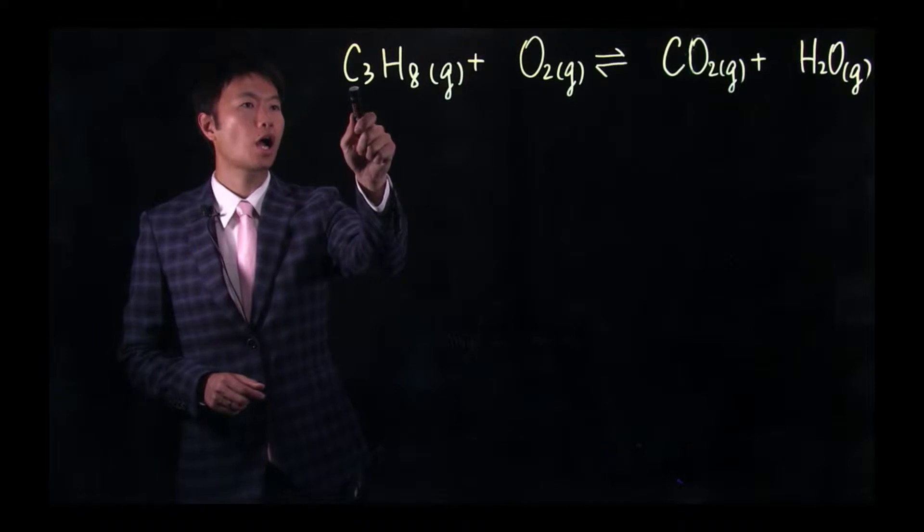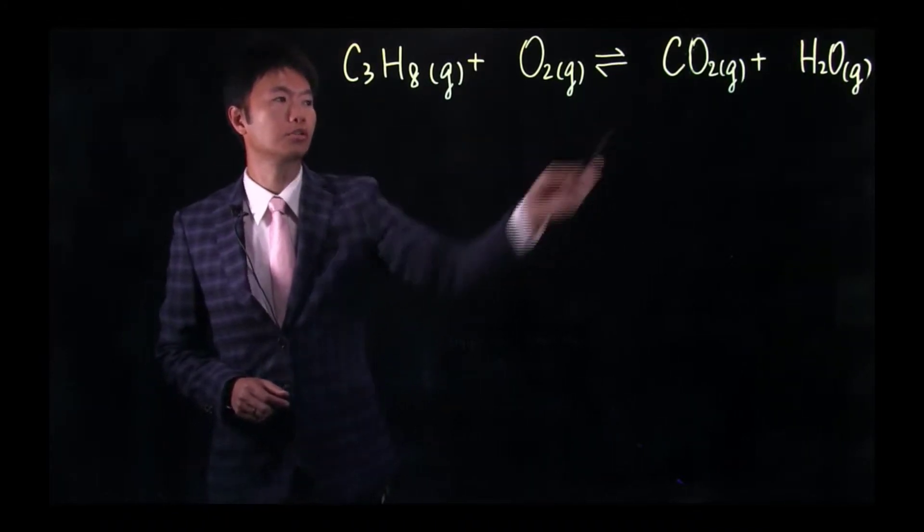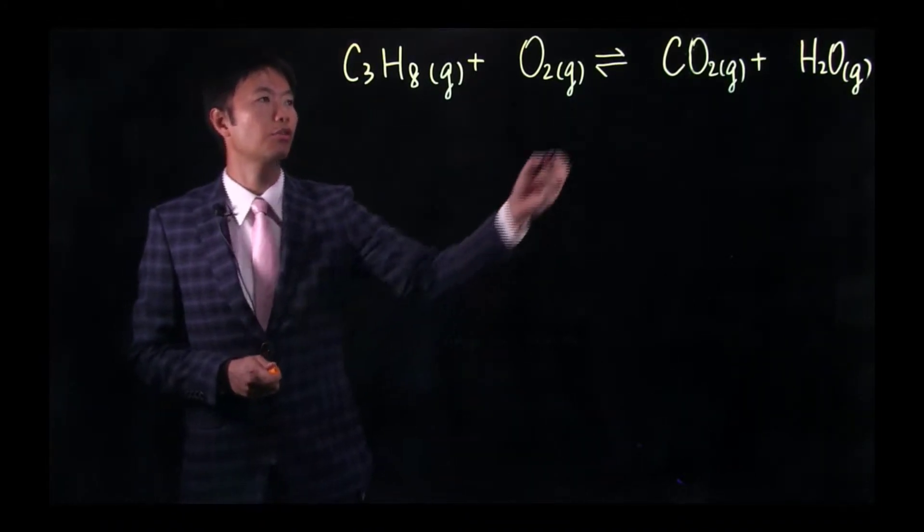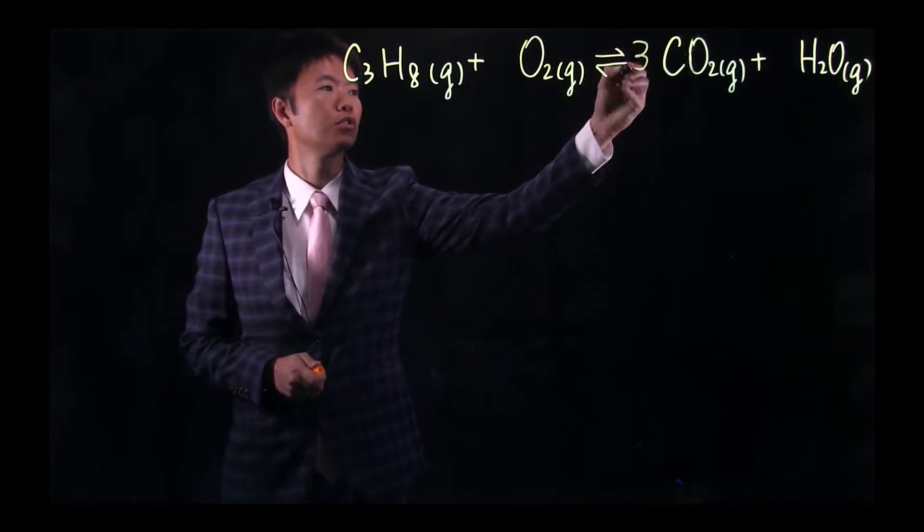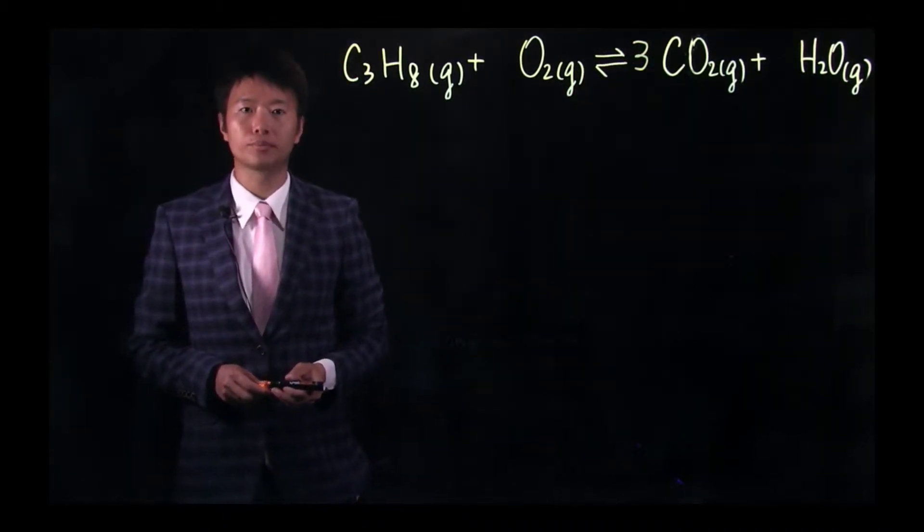We have three carbon on the right hand side and only one carbon on the product side. So we should put a three in front of CO2 on the product side to balance the number of carbon atoms.